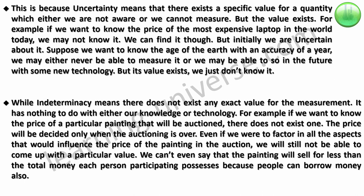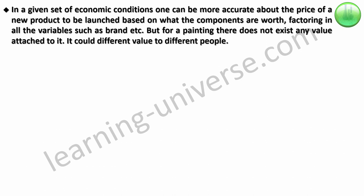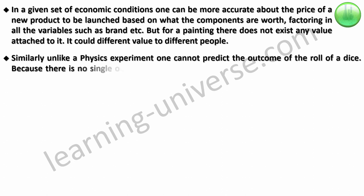In a given set of economic conditions, one can be more accurate about the price of a new product to be launched based on what the components are worth, factoring in all the variables such as brand. But for a painting, there does not exist any value attached to it. It could have different value to different people. Similarly, unlike a physics experiment, one cannot predict the outcome of a roll of a dice. Because there is no single outcome of the throw of a dice. It is dealt using probability, not certainty.